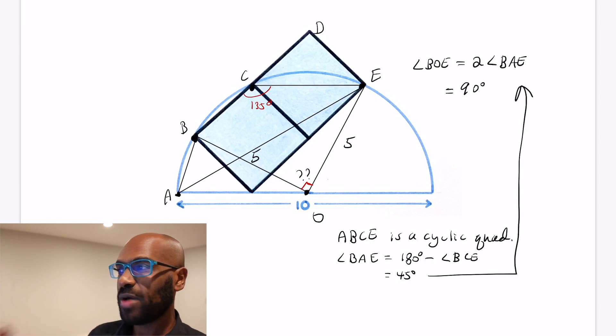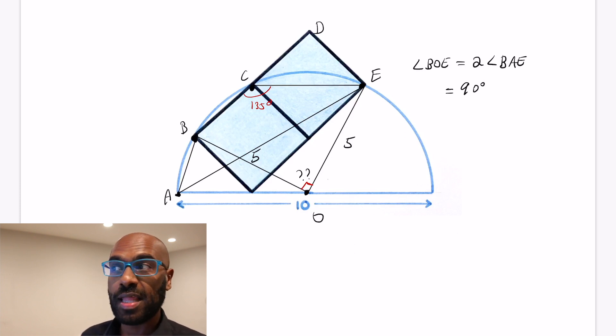So now that we have that this is a right angle, we're set up perfectly to figure out the length of BE, and then subsequently the length of the individual squares and so the area of the entire rectangle. So let's go ahead and do that. Side BE is going to be by Pythagorean theorem on BOE, 5 root 2.